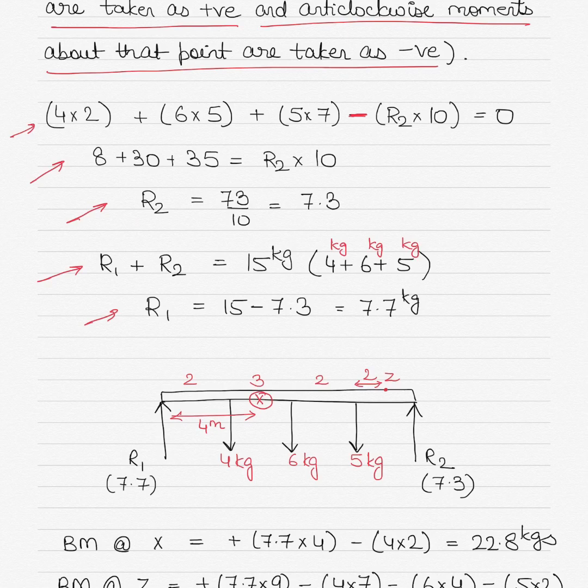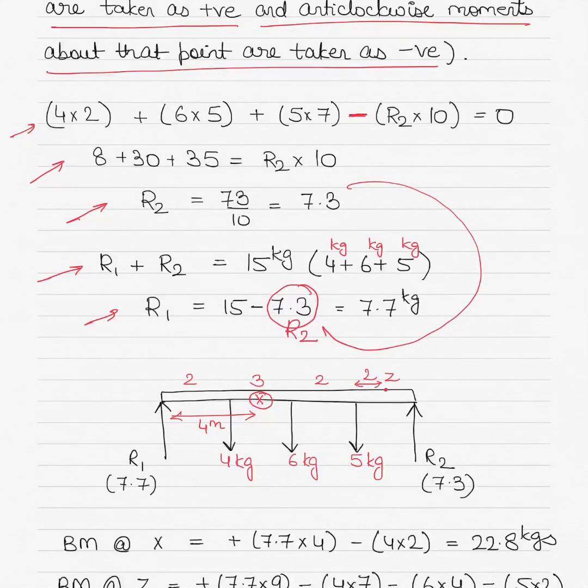So R1 will be 15 - 7.3, which is equal to 7.7. The 7.3 is nothing but R2, so we have replaced R2 with the value of 7.3.